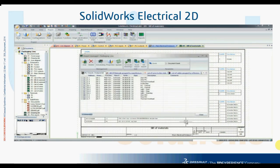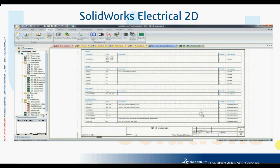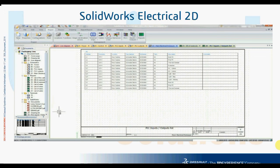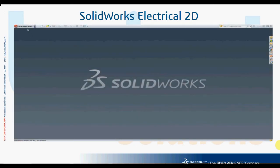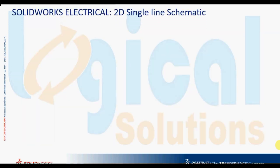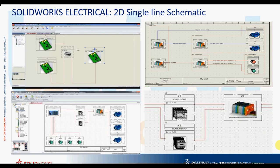Some information, like cable and wire lengths, cannot be calculated in a 2D environment. The same holds true for panel wiring optimization.